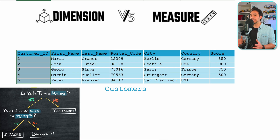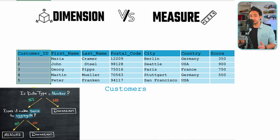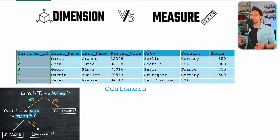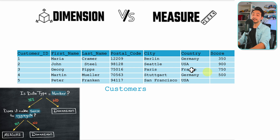The customer ID is a unique identifier for customers. For example, Maria has ID number 1 and Martin has 4. If we sum all those values we get 15, or averaging gives 3 — those values don't make sense. We use customer ID only to identify customers, so it makes no sense to aggregate it. Therefore, this field is a dimension.